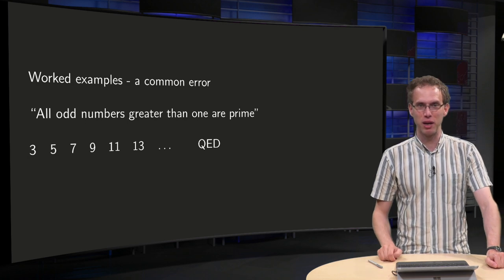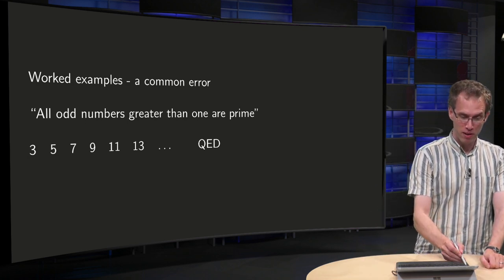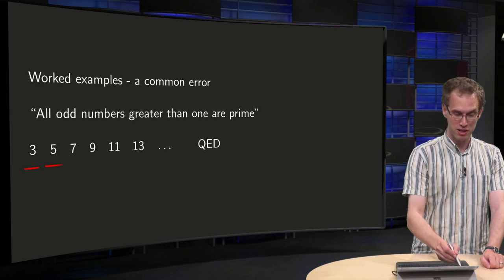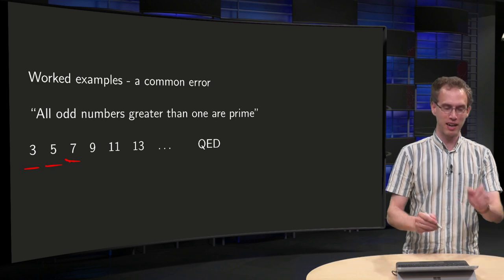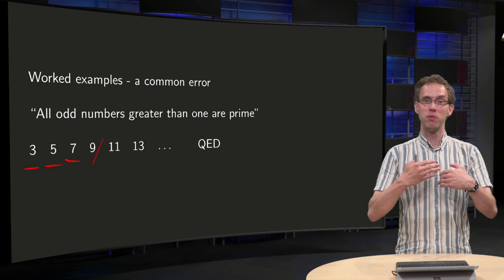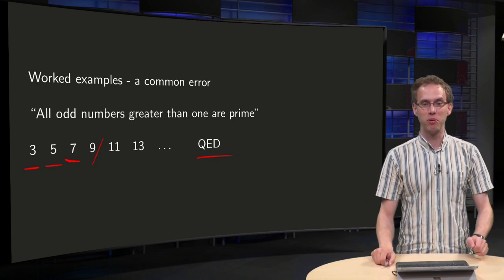Especially not on your exams. So how do we prove that? Well, as you know, 3 is prime, 5 is prime, 7 is prime, 9 is a measurement error, 11 is prime, 13 is prime, so all odd numbers are prime, and then we put a QED.